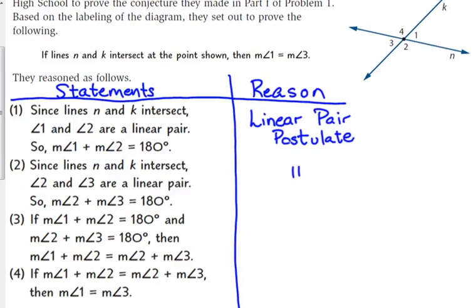Statement 3 says the measure of angle 1 plus the measure of angle 2 equals 180 degrees, and the measure of angle 2 plus the measure of angle 3 equals 180 degrees. Then we can say the measure of angle 1 plus the measure of angle 2 equals the measure of angle 2 plus the measure of angle 3. Since they're both equal to 180, that's the transitive property — if two things are equal to the same thing, we can set them equal to each other.